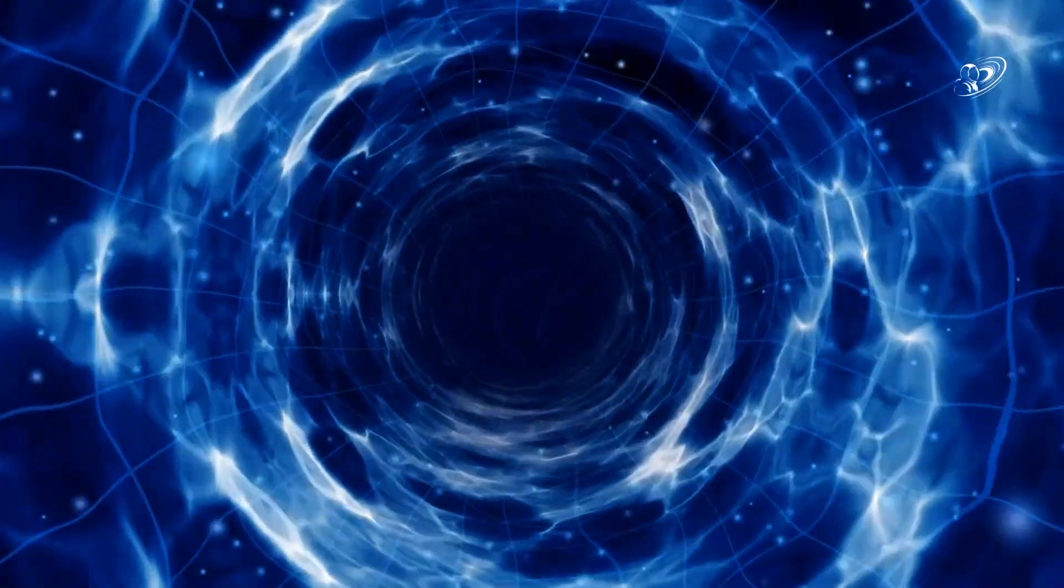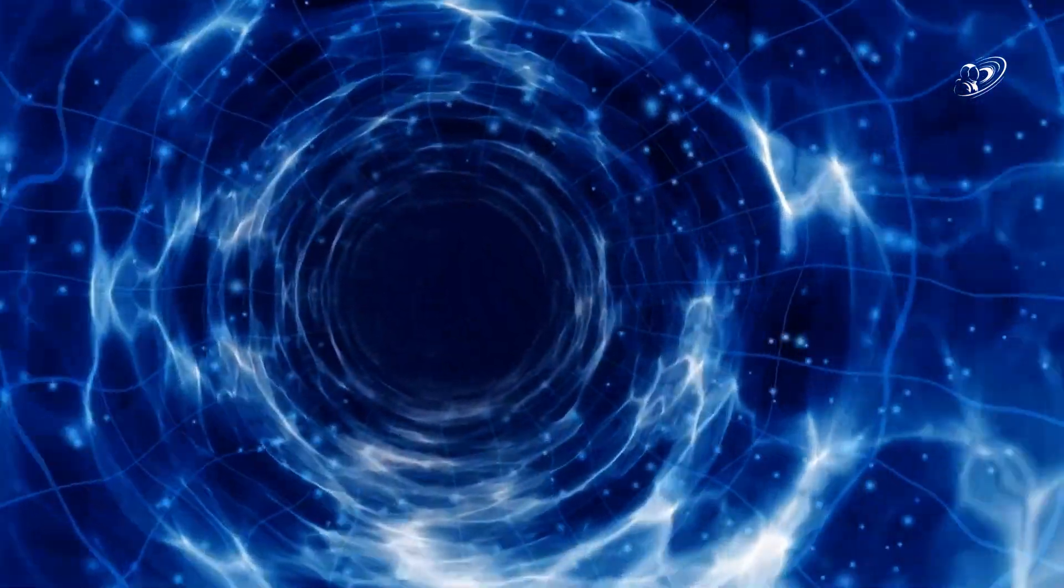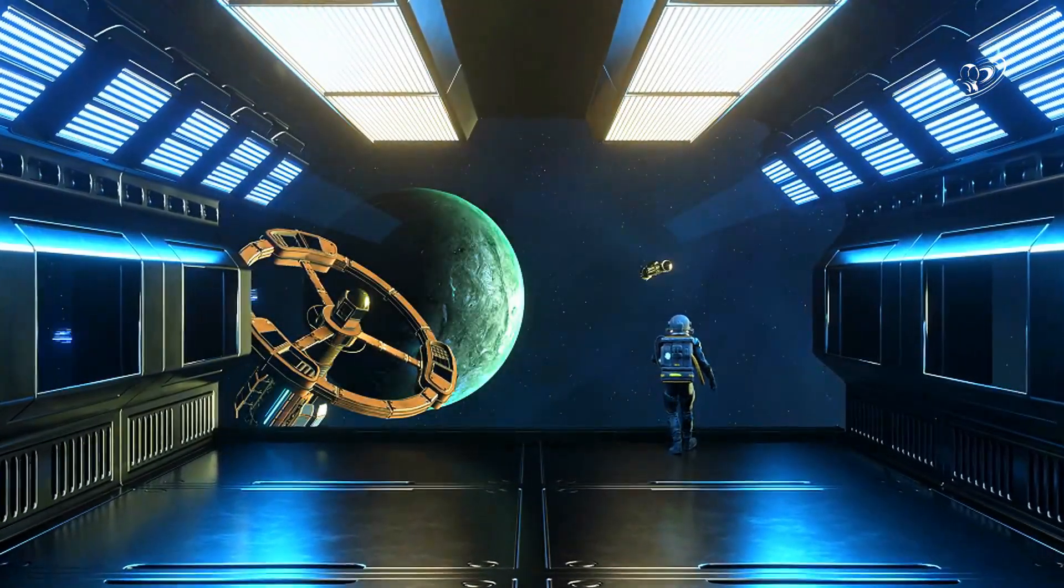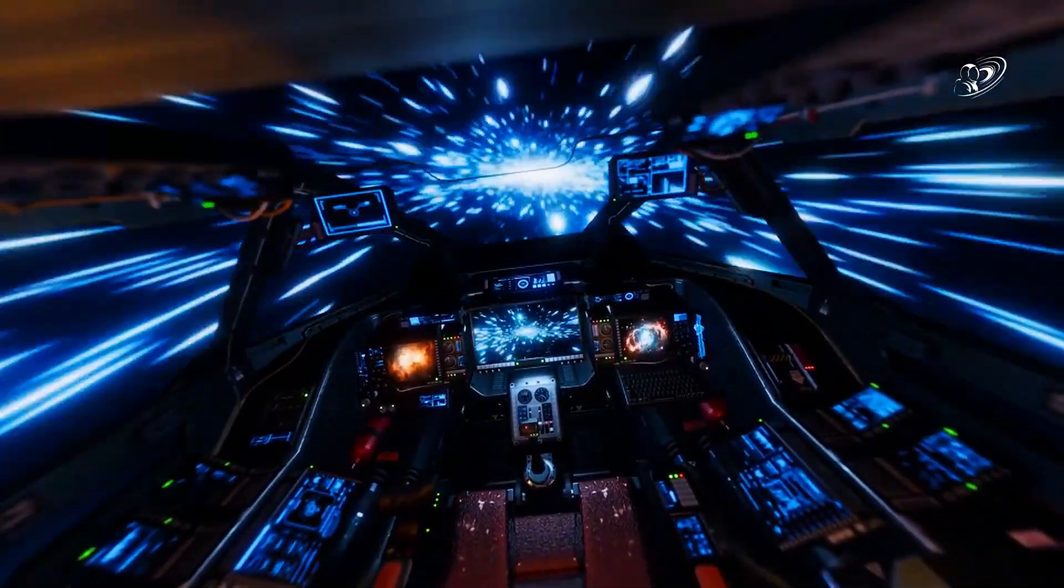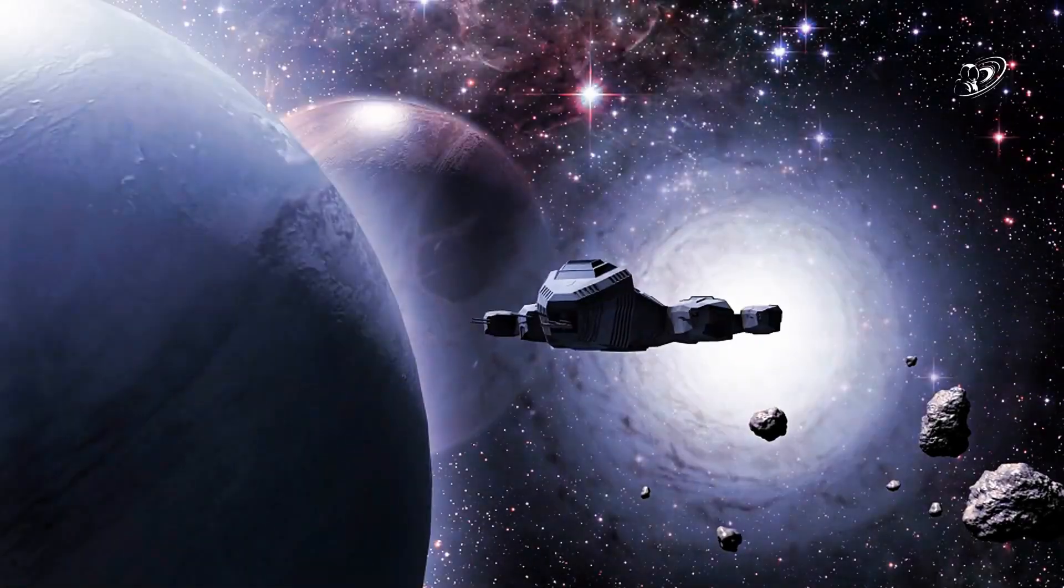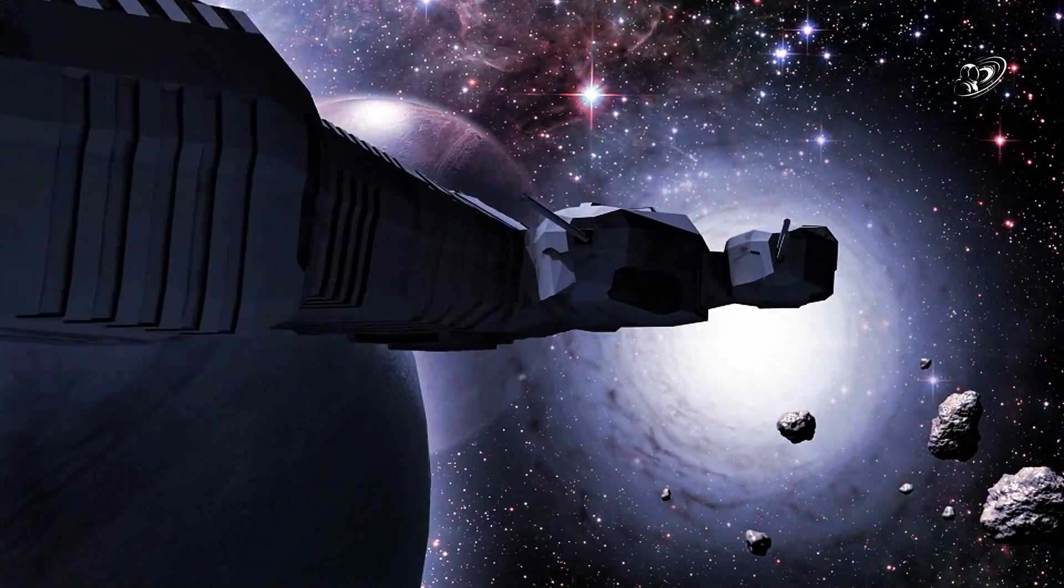Suppose we have a stable wormhole with two mouths, one located on Earth, and the other transported via spacecraft at near light speed to a distant star system. According to Einstein's theory of time dilation, time passes slower for the mouth traveling at relativistic speeds.